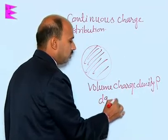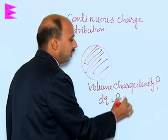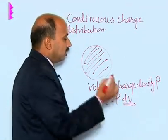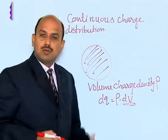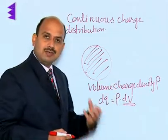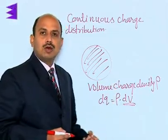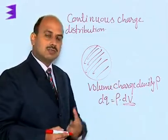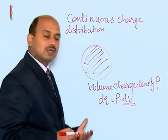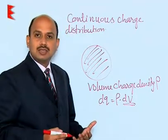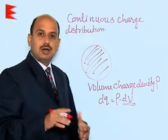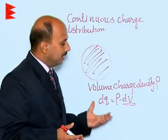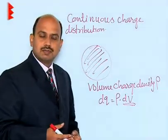DQ is equal to rho into DV, where DV is a small volume. First we take the small volume and calculate the charge in this small volume, and then we can calculate the total charge in the whole body just by integrating it.